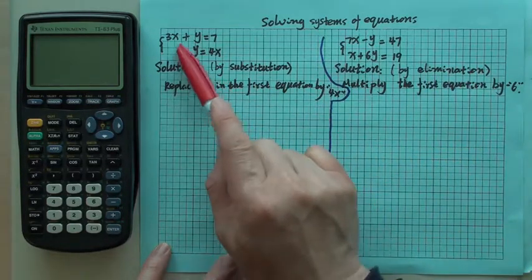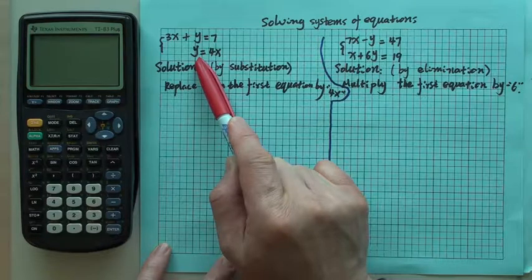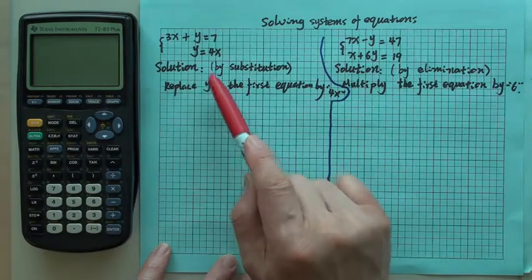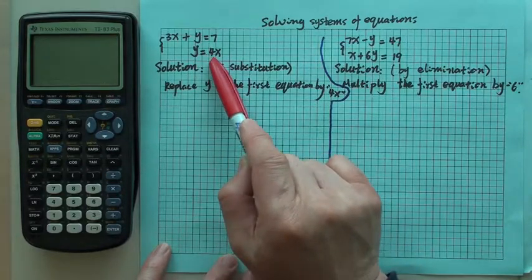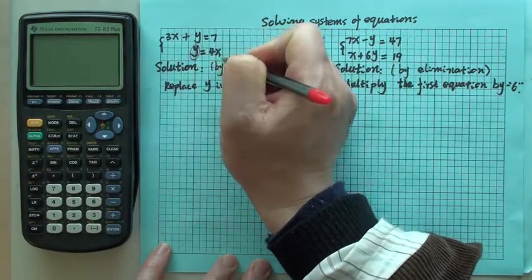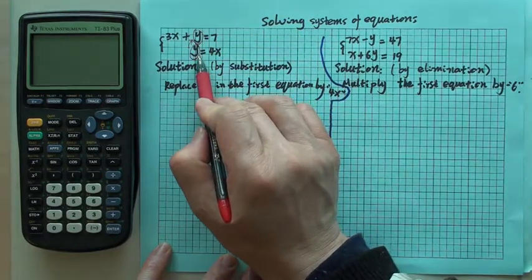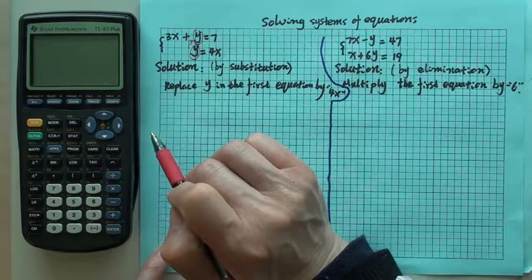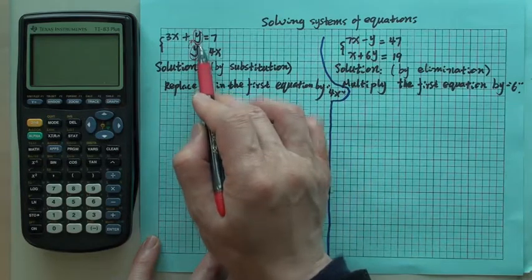The first example is 3x plus y equals 7. The second equation is y equals 4x. Now we want to solve this one by substitution. We know here is that y is given as 4x. So if y is 4x, then we like to replace this y by 4x because y equals 4x. So we wrote here as replace y in the first equation by 4x.